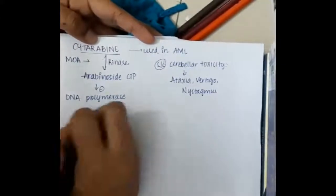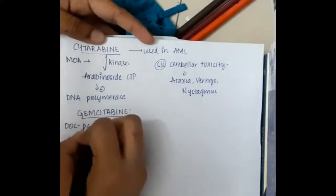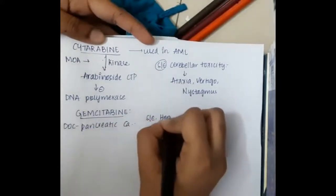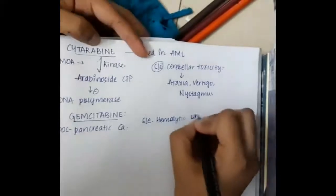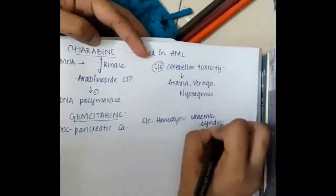Gemcitabine is the drug of choice for pancreatic carcinoma. It can cause hemolytic uremic syndrome as a side effect.